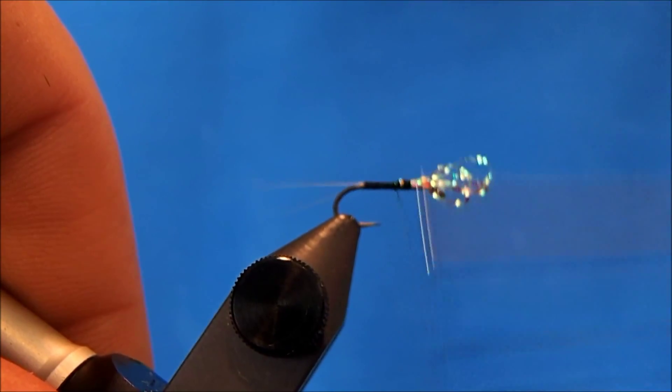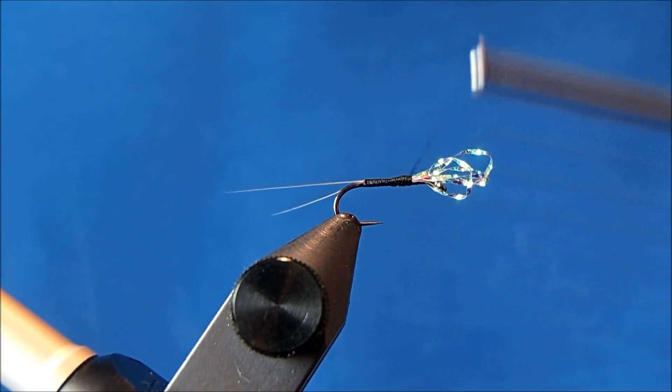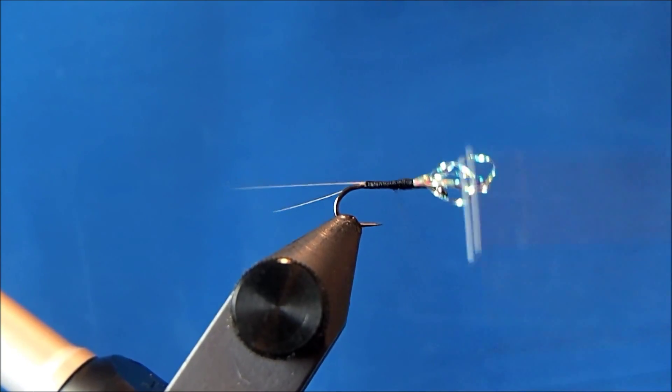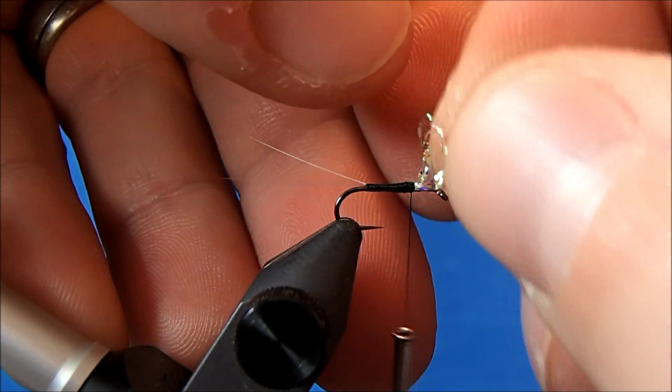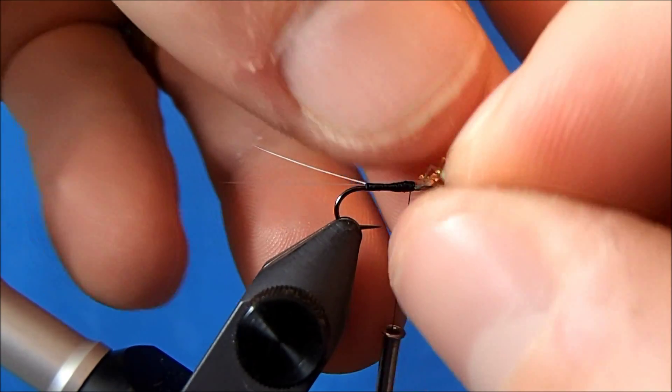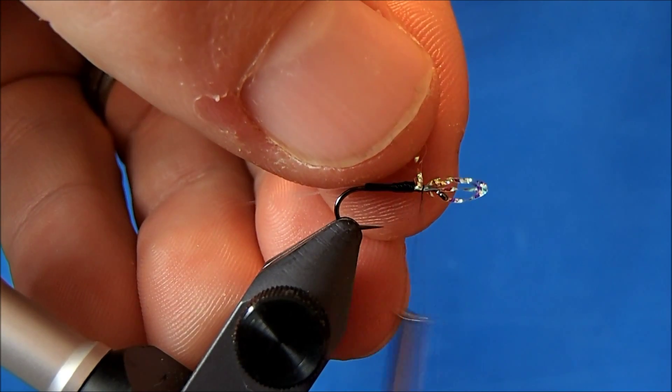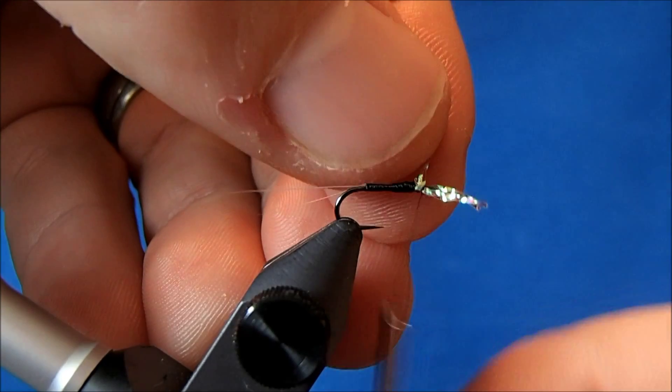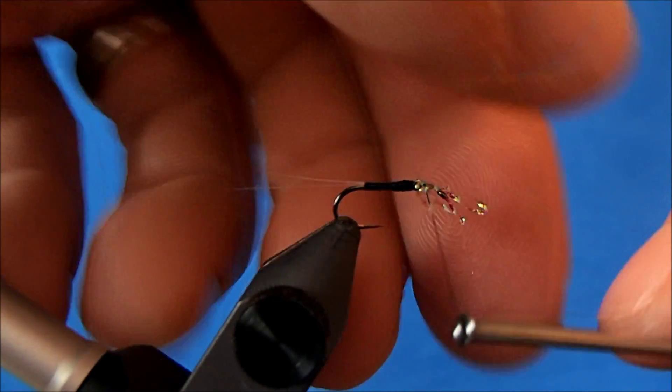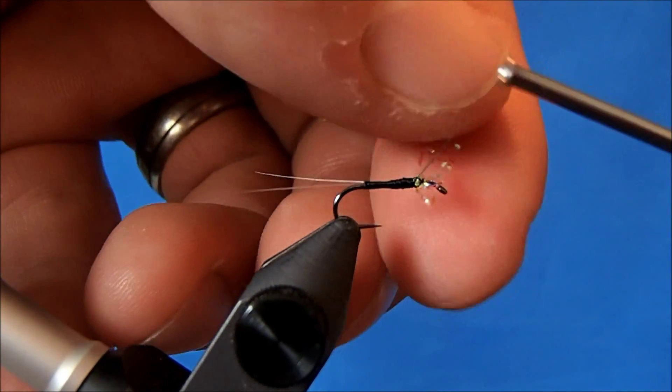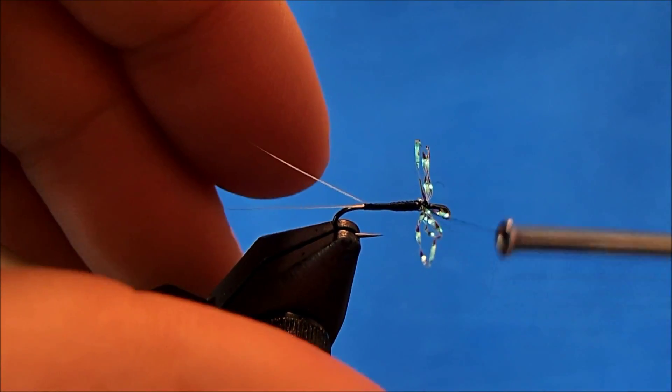I'll tie down those ends, and now I can separate these two, or separate these what are now four loops into two wings. You just kind of need to get in there and pull them apart. Once they start to separate, they're a little easier to work with.